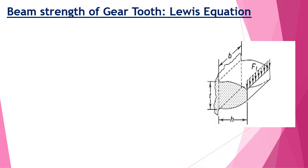Lewis treated the gear tooth as a cantilever beam, as shown in the figure. The resultant force acting on the tooth of the gear is resolved into two components: one is the tangential force, which is responsible for transmitting the torque, and the other is the radial component, which is the separating force. The useful force is the tangential force, denoted by Ft, shown acting on the tooth.